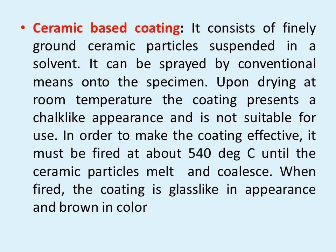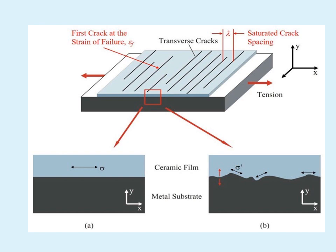Ceramic-based coating: It consists of finely ground ceramic particles suspended in a solvent. It can be sprayed by conventional means onto the specimen. Upon drying at room temperature, the coating presents a chalk-like appearance and is not suitable for use. In order to make the coating effective, it must be fired at about 540 degree centigrade until the ceramic particles melt and coalesce. When fired, the coating is glass-like in appearance and brown in color. This is an example or demonstration for the ceramic film or ceramic coating. The above one is the ceramic and below is the metal substrate whereas ceramic film acts like a coating.